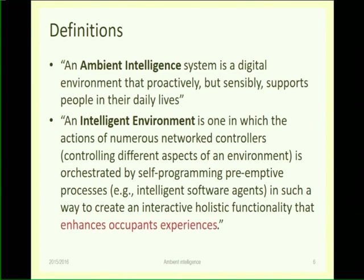We will spend more time later on the definition of ambient intelligence. We will read these sentences and identify the meaning of the different words in order to understand what the implications and characteristics of this system are. An ambient intelligence system is a digital environment — electronics, informatics, sensors, motors, lights, everything connected together — that proactively, but sensibly, supports people in their daily lives. The most important word in this definition? People.